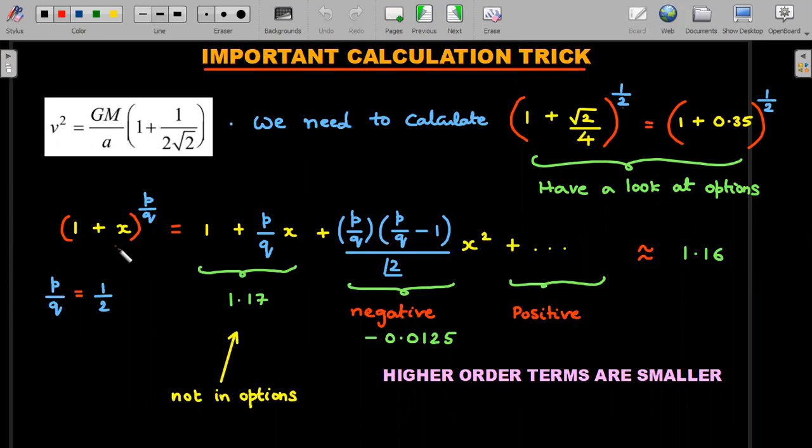Now, the next step is to understand in this kind of situations where power is asked. And we look at the binomial expansion of a fractional power 1 plus x whole power p by q here, the p by q is half. So the usual notation, most of the students understand is to take the first two terms, which is one plus p by q times of x.